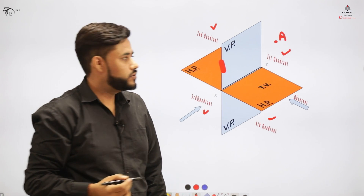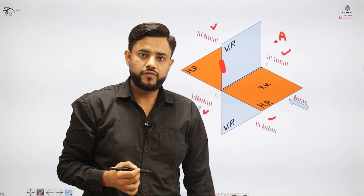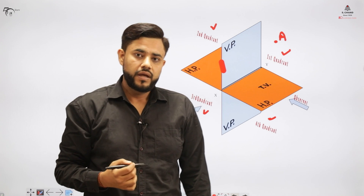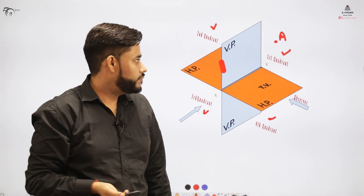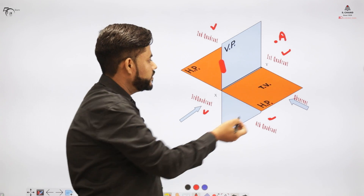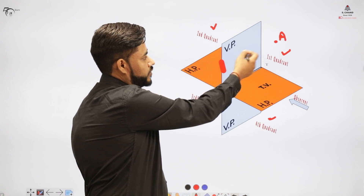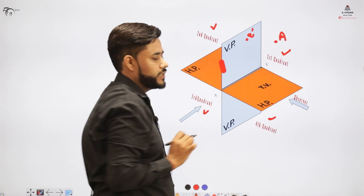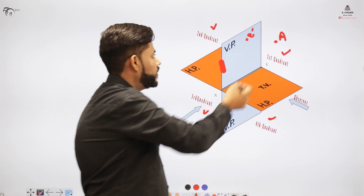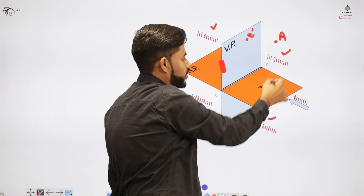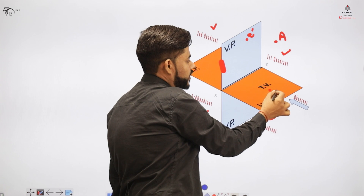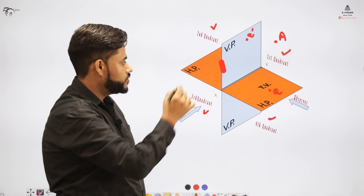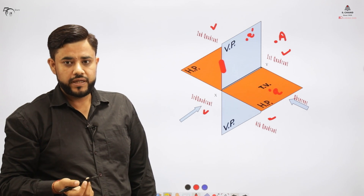In my previous video I talked about the general notation we would be following. The general notation to write the front view is with a dash, and the general notation to write the top view is without a dash. So if the observer is watching the object from the front, he gets the front view represented as a dash. If the observer is watching from the top, he gets the top view called 'a'.